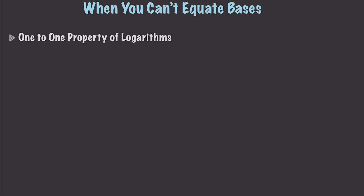But we need to learn another rule: the one-to-one property of logarithms. This is very similar to the first one-to-one property we learned. It says that if log base b of x equals log base b of y, then x equals y. Now let's solve an exponential equation in which we cannot equate bases, using both of these new rules.